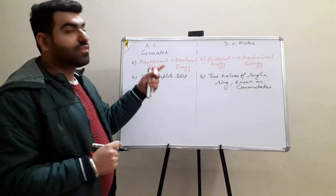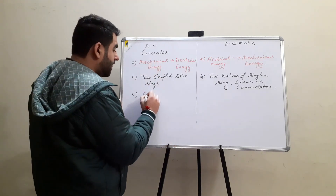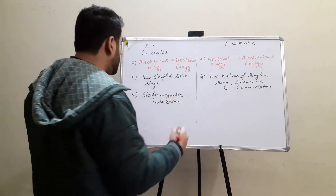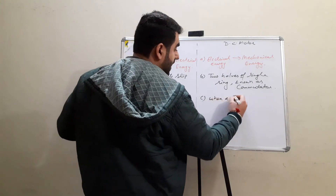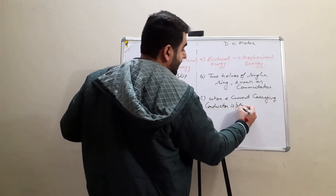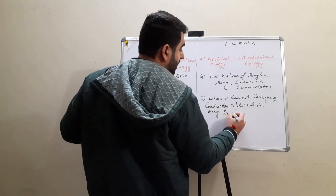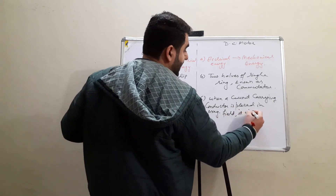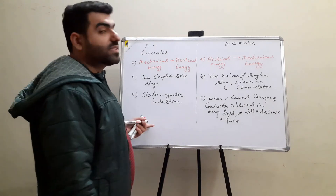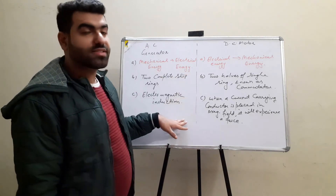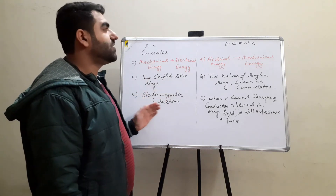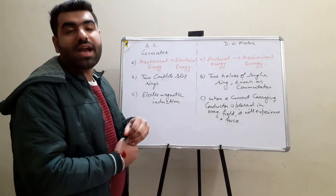The third difference between AC generator and DC motor is its principle. An AC generator is based on electromagnetic induction, whereas a DC motor is based on the principle that when a current-carrying conductor is placed in a magnetic field, it will experience a force. So these are the three differences: energy conversion, constructional difference in the rings, and the underlying principle.